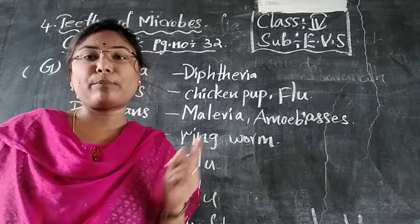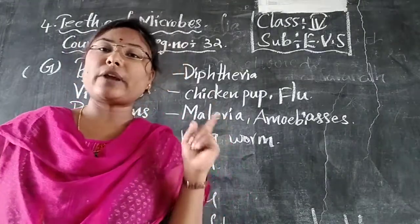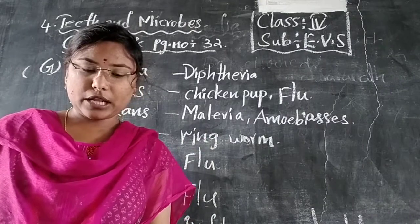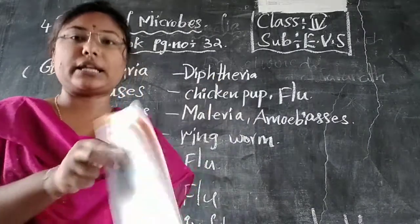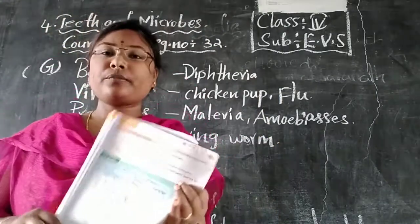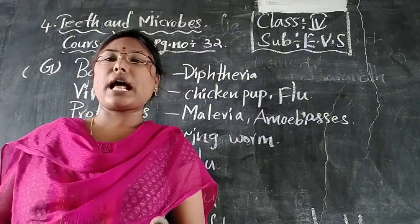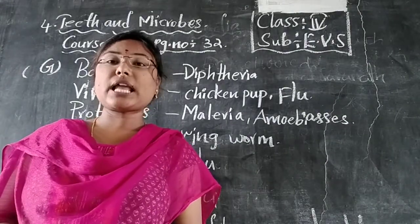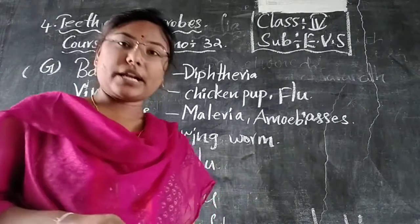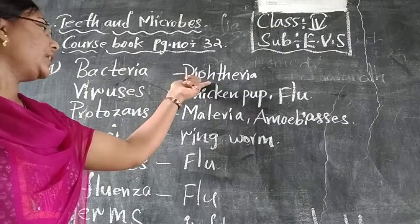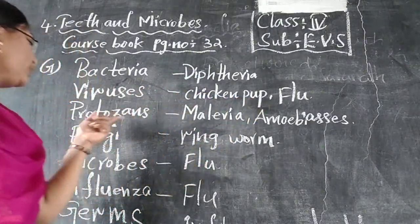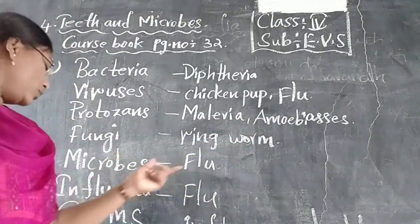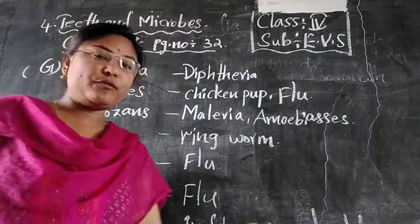Write the difference between temporary and permanent teeth. Temporary teeth are 20 only; permanent teeth are 32. We will draw two structures. Fungi causes ringworms. Microbes include flu, influenza, germs, influenza and cold.